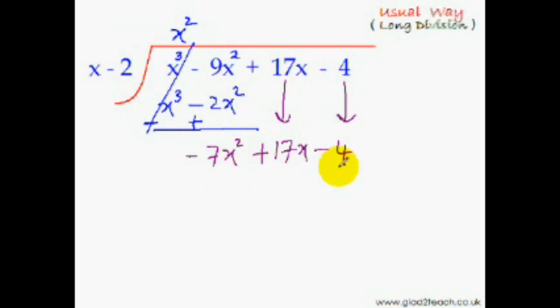This is a new dividend, and once again we repeat the same process. We divide the first term of this new dividend by the first term of the divisor. Minus 7x² divided by x is minus 7x. Once again we multiply this answer term with all the terms of the divisor. Minus 7x times x gives us minus 7x². Minus 7x times minus 2 gives us plus 14x. Now once again you subtract by changing the sign. Minus 7x² plus 7x², they cancel each other out, and 17x minus 14x is 3x.